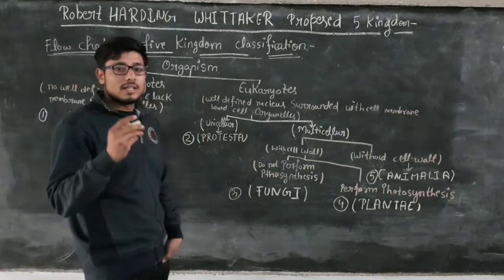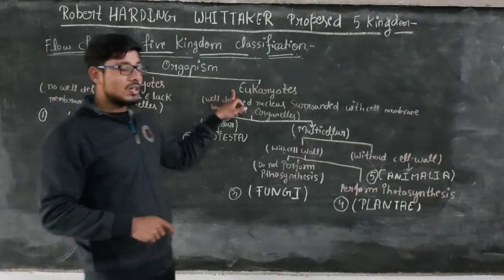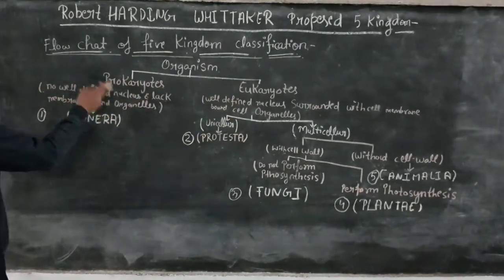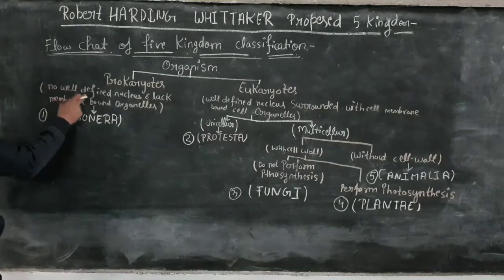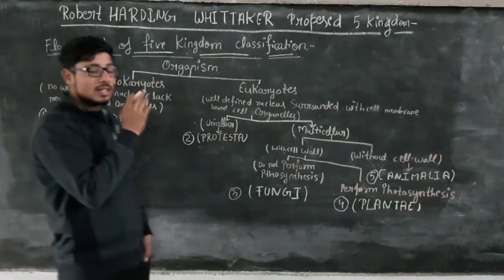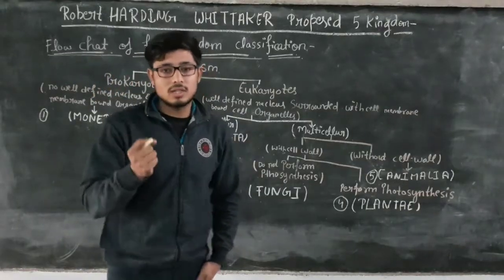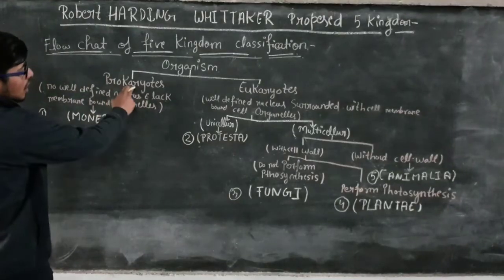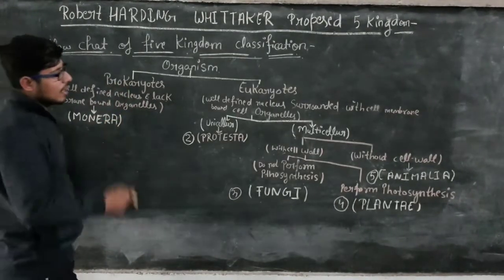Organisms are divided into two parts. The first is Prokaryotic Organism and the second is Eukaryotic Organism. Prokaryotic Organism is also called Monera. Prokaryotic organisms are those organisms which have no well-defined nucleus and lack membrane-bound organelles. These organisms are called Prokaryotic Organisms and are included in the group of Monera.